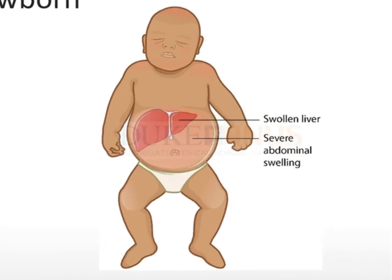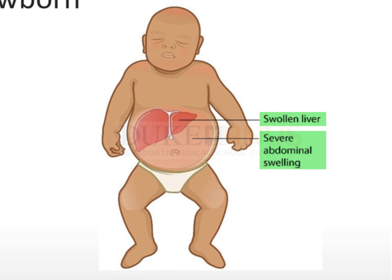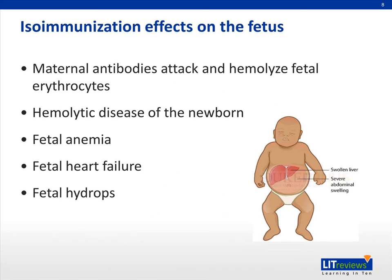Symptoms and signs of an affected fetus can be seen by ultrasound. This includes an enlarged liver, spleen, or heart, and fluid buildup in the fetus's abdomen that can be seen by ultrasound. Symptoms and signs of an affected newborn can include anemia that causes the newborn's skin to be pale in appearance, jaundice or yellow discoloration of the newborn's skin, sclerae, or mucous membranes. This may be evident right after birth or 24 to 48 hours after birth, and is caused by high levels of bilirubin, which is one of the end products of red blood cell destruction caused by hemolysis.